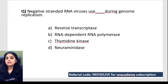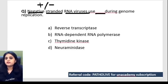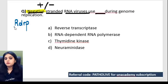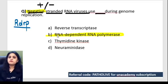One more question: negative-sense RNA viruses, or negative-stranded RNA viruses, use something during the replication process. Positive-stranded RNA viruses can be read directly. Negative-stranded RNA viruses use RDRP — RNA-dependent RNA polymerase — during replication.